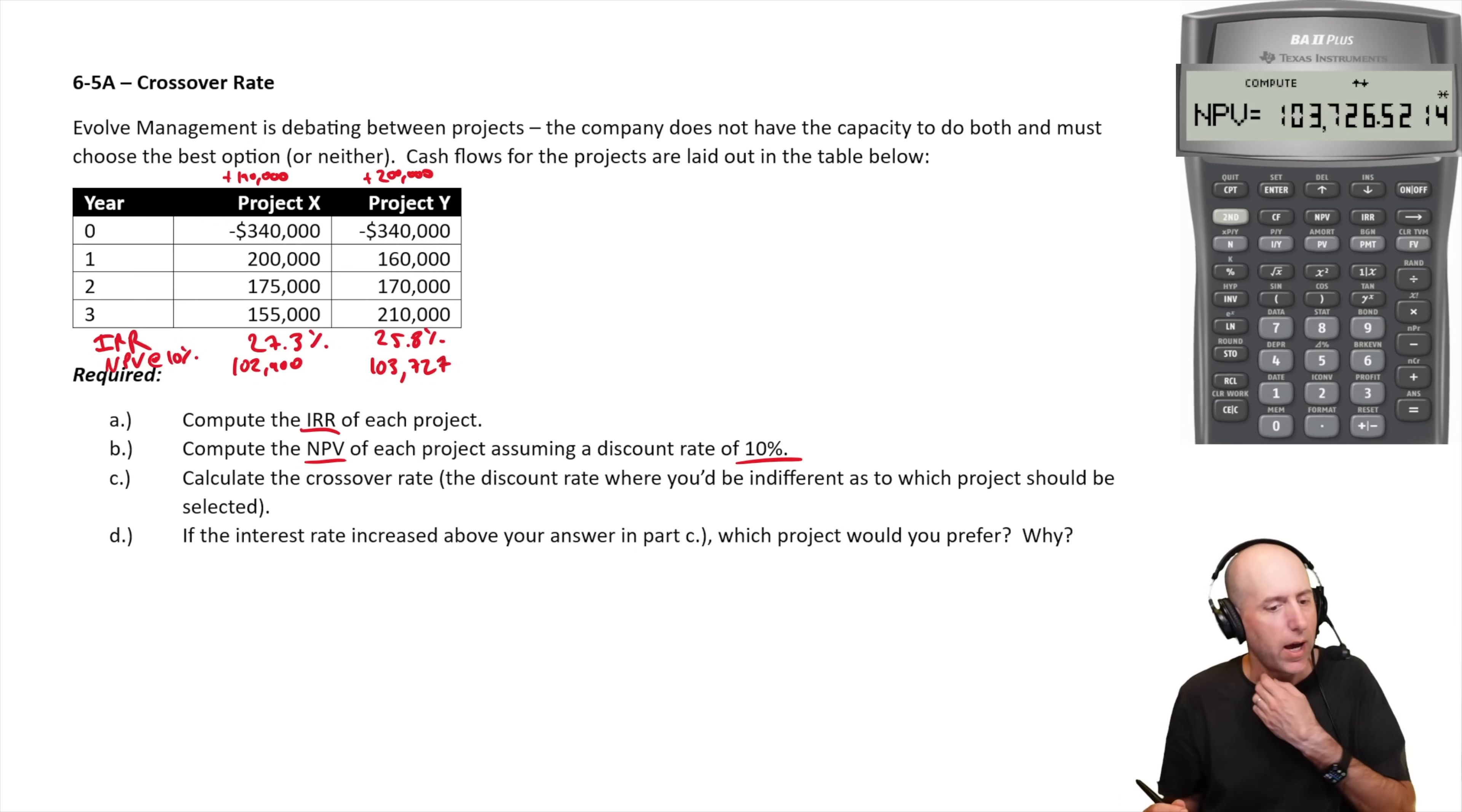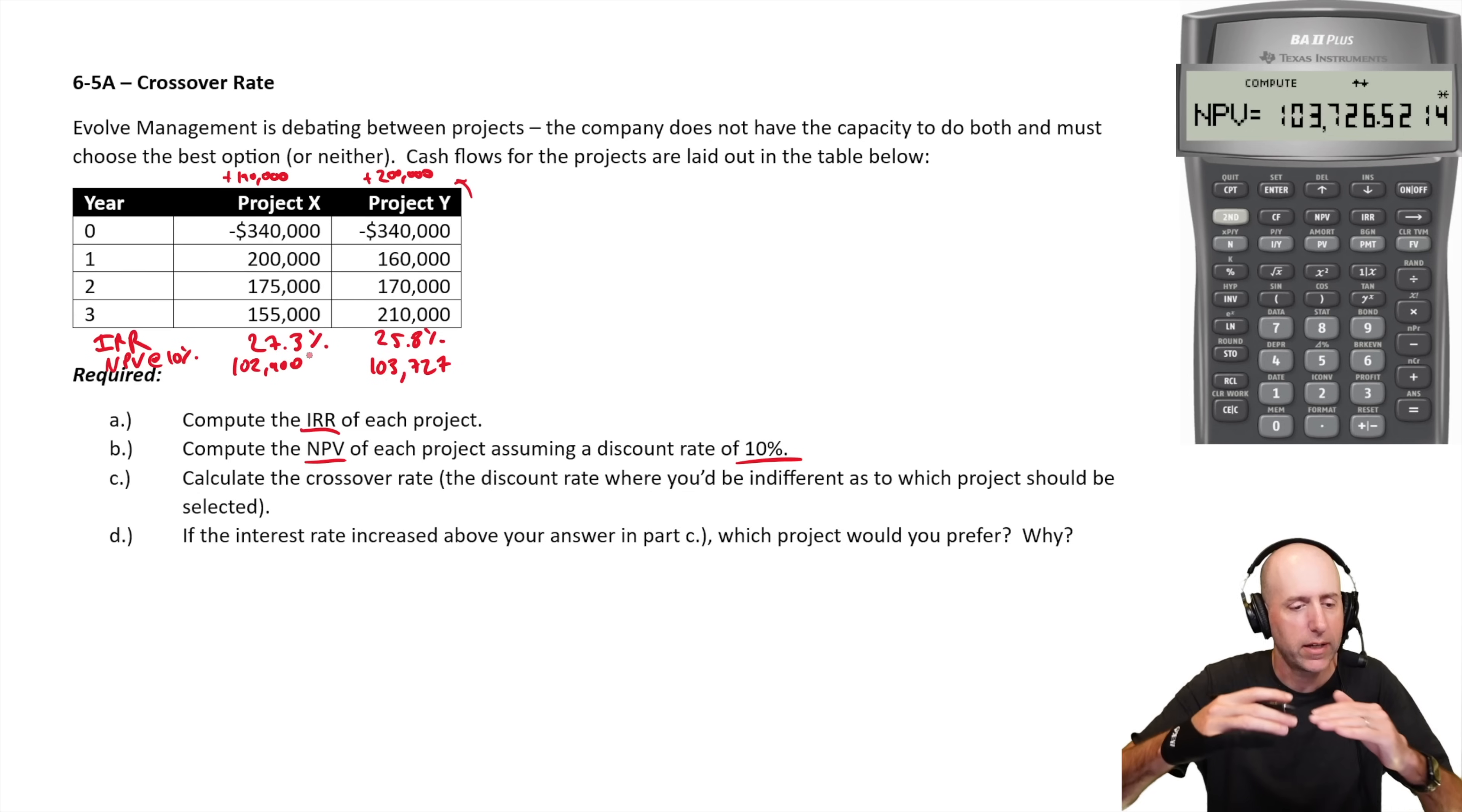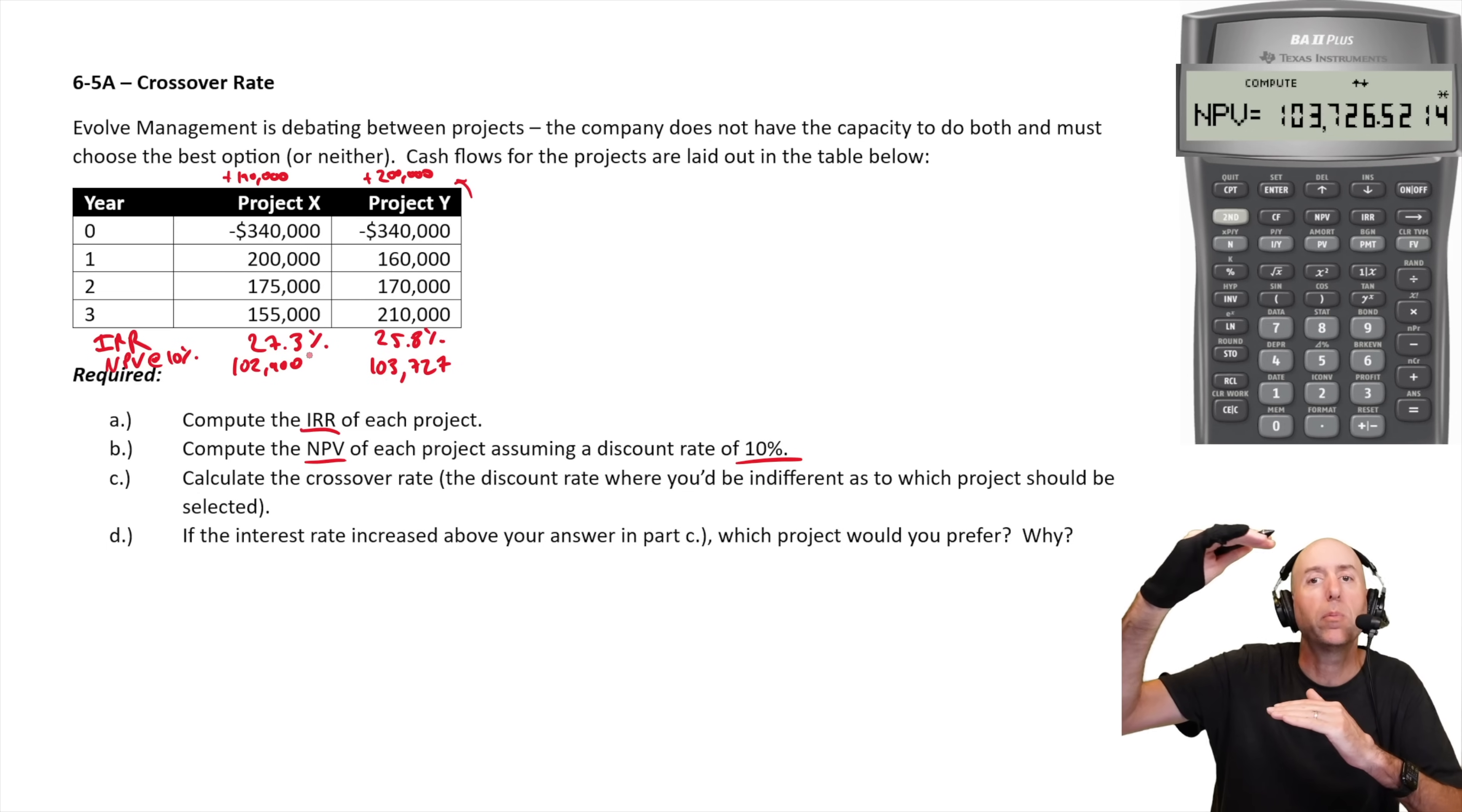So the internal rate of return is higher for project X. But the net present value at a 10% discount rate is higher for project Y. And just eyeballing this, as the discount rate goes from 0%, we really prefer project Y because it's 200 versus 190. At 10%, we still prefer project Y. But at some point, because look at the IRR, it's higher for project X, at some point we're going to start to prefer project X.